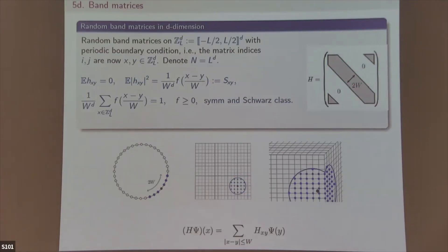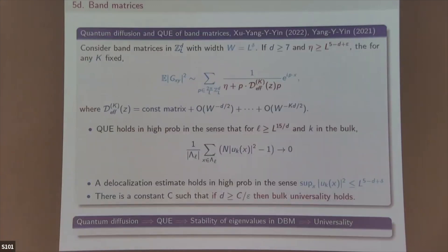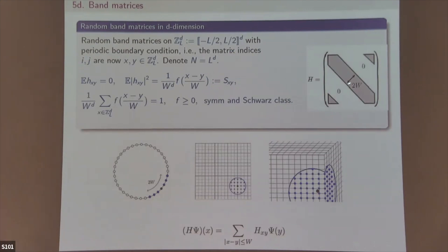Physicists believe this is an easier model than the random Schrödinger equation. Tom Spencer wrote a review article about this and we looked at it because Tom mentioned it so many times. The random band matrix is a toy model for the Anderson/Schrödinger equation. [Audience: is that picture one-dimensional?] Yes, that picture is one-dimensional.